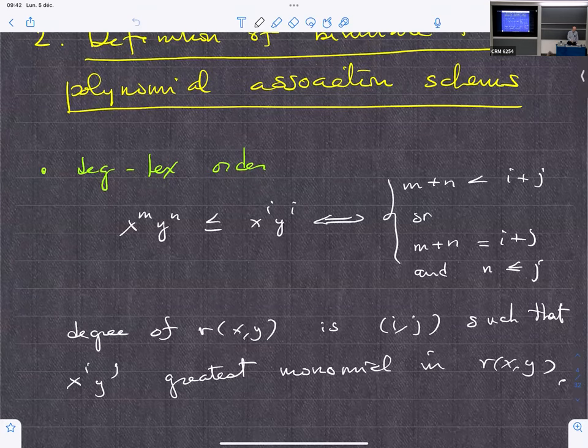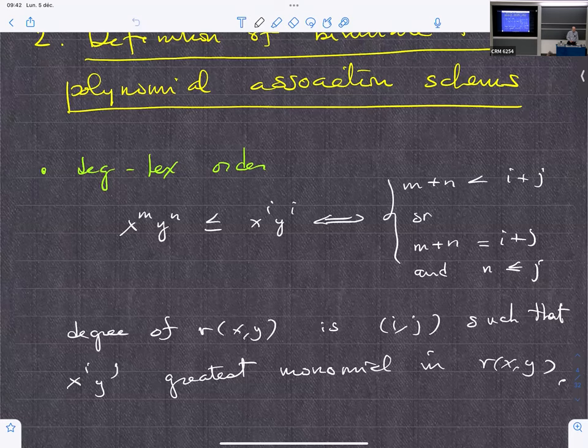I'll go through the definition in case you've not seen it. You have a set of objects, which we'll think for the purpose of the definition as being adjacency matrices, the A_i. You say the scheme is a symmetric association scheme with N classes.